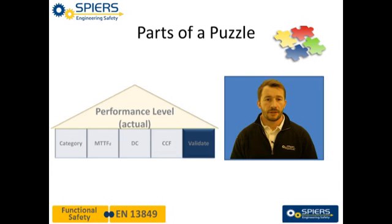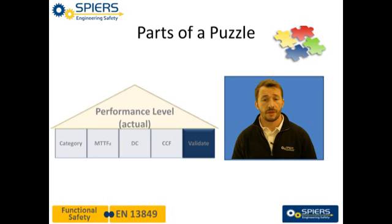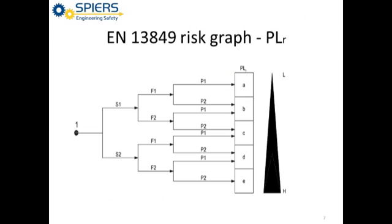During the validation and verification, you will demonstrate that the combination of the safety-related parts and control system for each safety function meets all relevant requirements and risk reductions identified. The risk reduction required can be identified using the risk graph from Annex A.